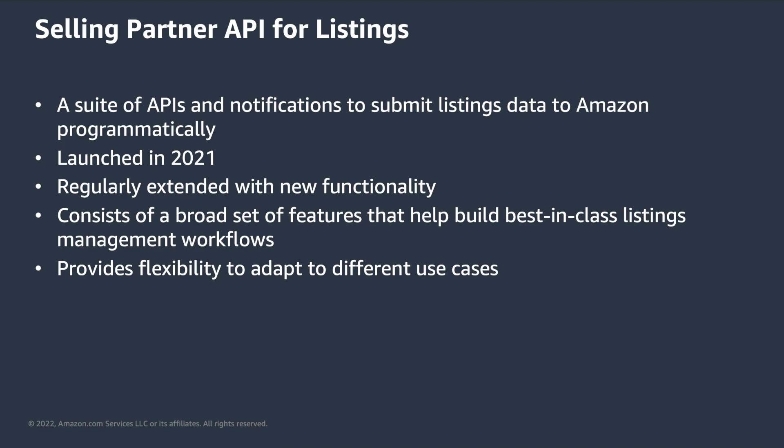At a high level, what is the Selling Partner API for Listings? It is a suite of API sections and notifications that enable Selling Partners to submit listings data to Amazon programmatically. It was launched in 2021 and has been regularly extended with new functionality since then. All these different API sections and notifications, which we will cover in detail shortly, provide a broad set of features that help build best-in-class listings management workflows.